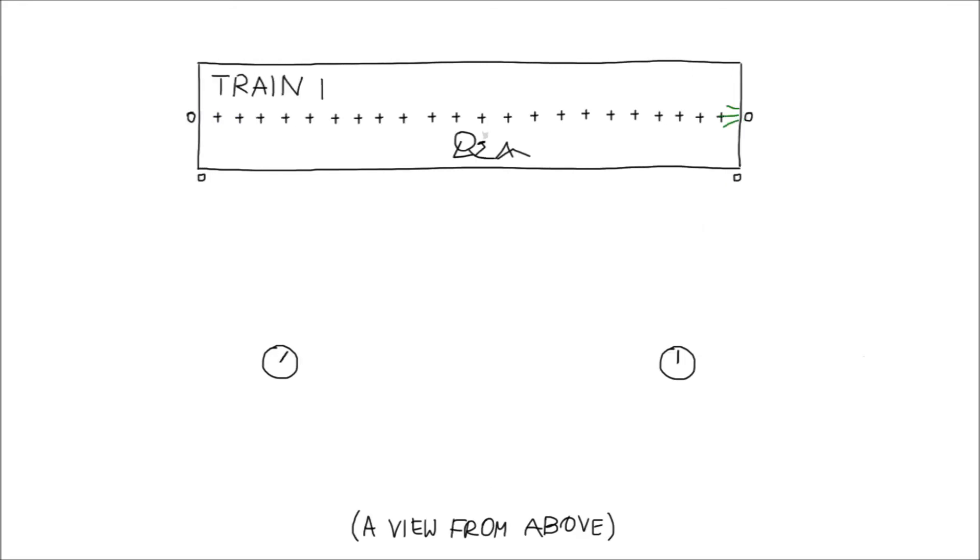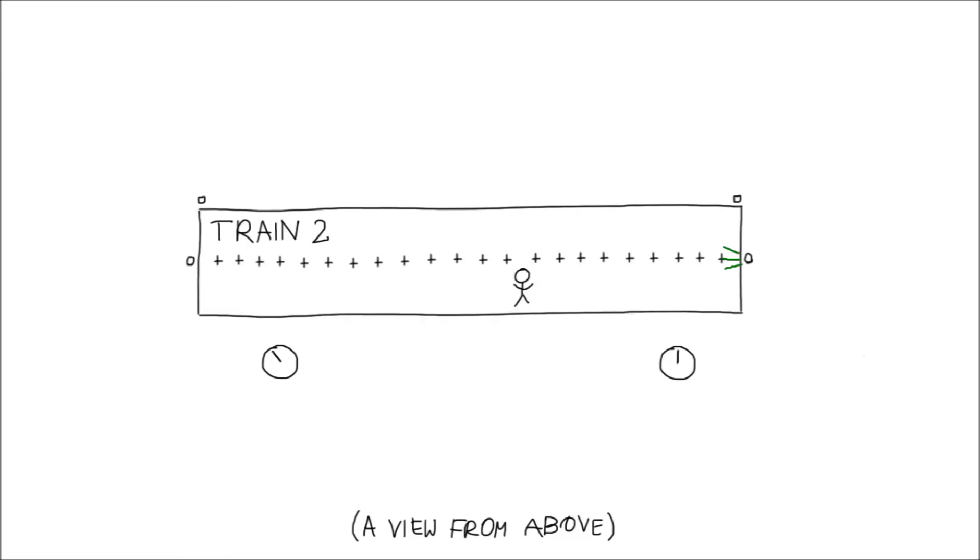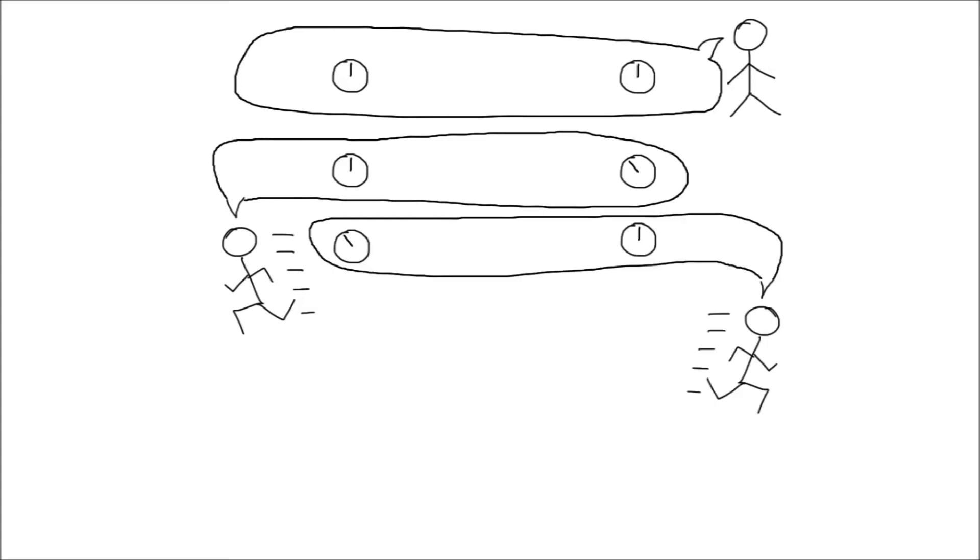This is not a paradox. This is a feature of special relativity. In fact, for any two events that happen simultaneously according to one observer, you can find another observer for whom the events happen in any order you want. This is called relativity of simultaneity.